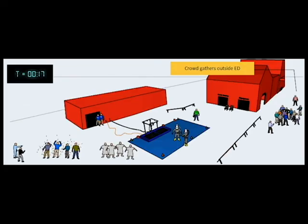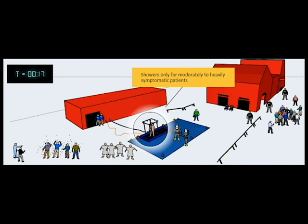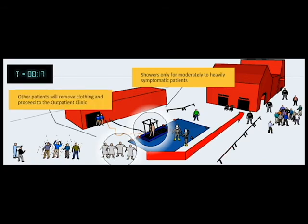A crowd is forming outside the emergency department. Several security officers are making sure they don't interfere with the emergency decontamination operation. Only those victims who remain moderately or severely symptomatic after clothing removal require showers. All others will be given self-care kits to hold contaminated clothing and once their clothing has been removed, they will be directed to the outpatient clinic area across from the ED entrance according to the hospital's mass casualty procedures. This step markedly reduces the number of victims requiring a shower.